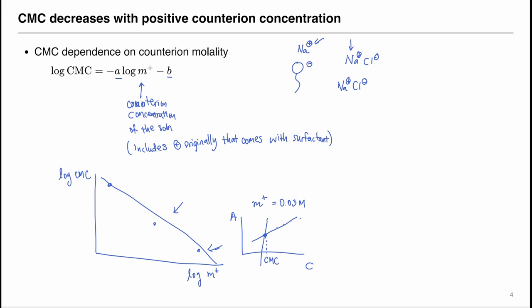For that particular counterion concentration, say 0.03 molar. And then for another one, we can do another slope analysis to get the CMC. And similarly for other points. So we can construct a graph to calculate what the A and B constants are.